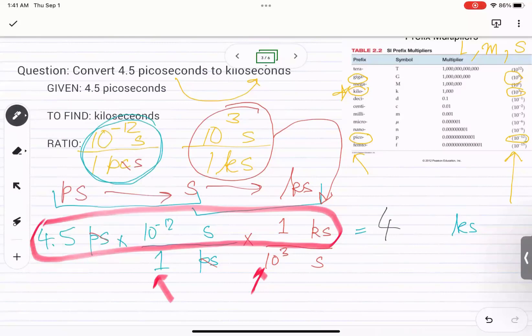You should get your answer as 4.5 times 10 raised to negative 15 kiloseconds. Please note you have two sig figs. So your final answer also should have two sig figs. And it's going to be in this format when written in scientific notation.